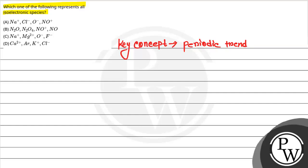Isoelectronic ka matlab kya hai? Isoelectronic means two elements having same number of electrons at any state.